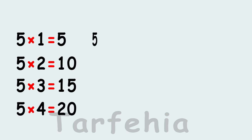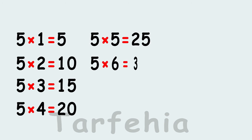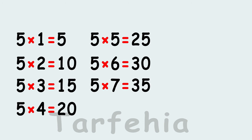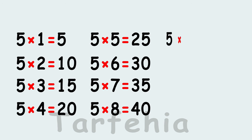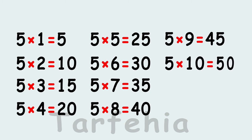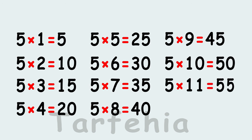5 times 5 equals 25. 5 times 6 equals 30. 5 times 7 equals 35. 5 times 8 equals 40. 5 times 9 equals 45. 5 times 10 equals 50.